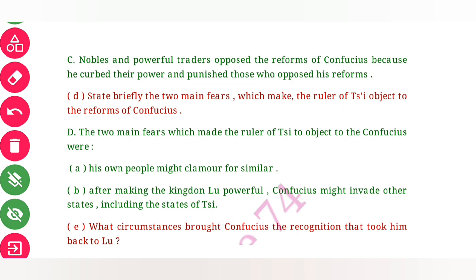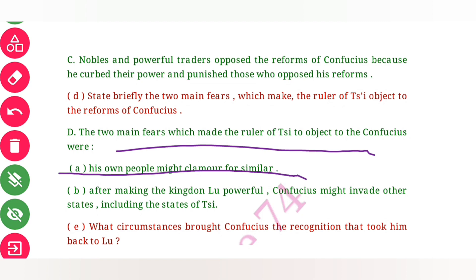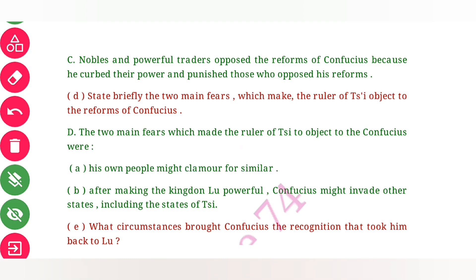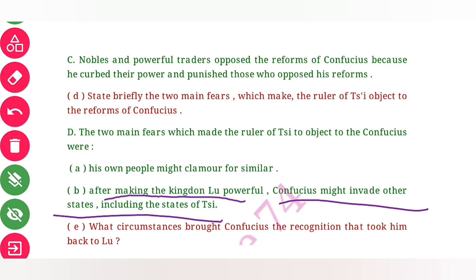Briefly state the two main fears which made the ruler of She object to the reforms of Confucius. The main fears were: his own people might clamor for similar reforms, and after making the kingdom powerful, Confucius might invade other states including the state of She.